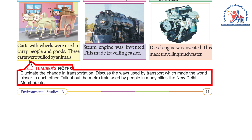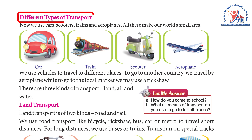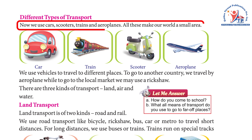The diesel engine was invented, which made traveling much faster. Teachers' notes: Discuss the change in transportation and the ways transport has made the world closer. Talk about the metro train used by people in many cities like New Delhi, Mumbai, etc.